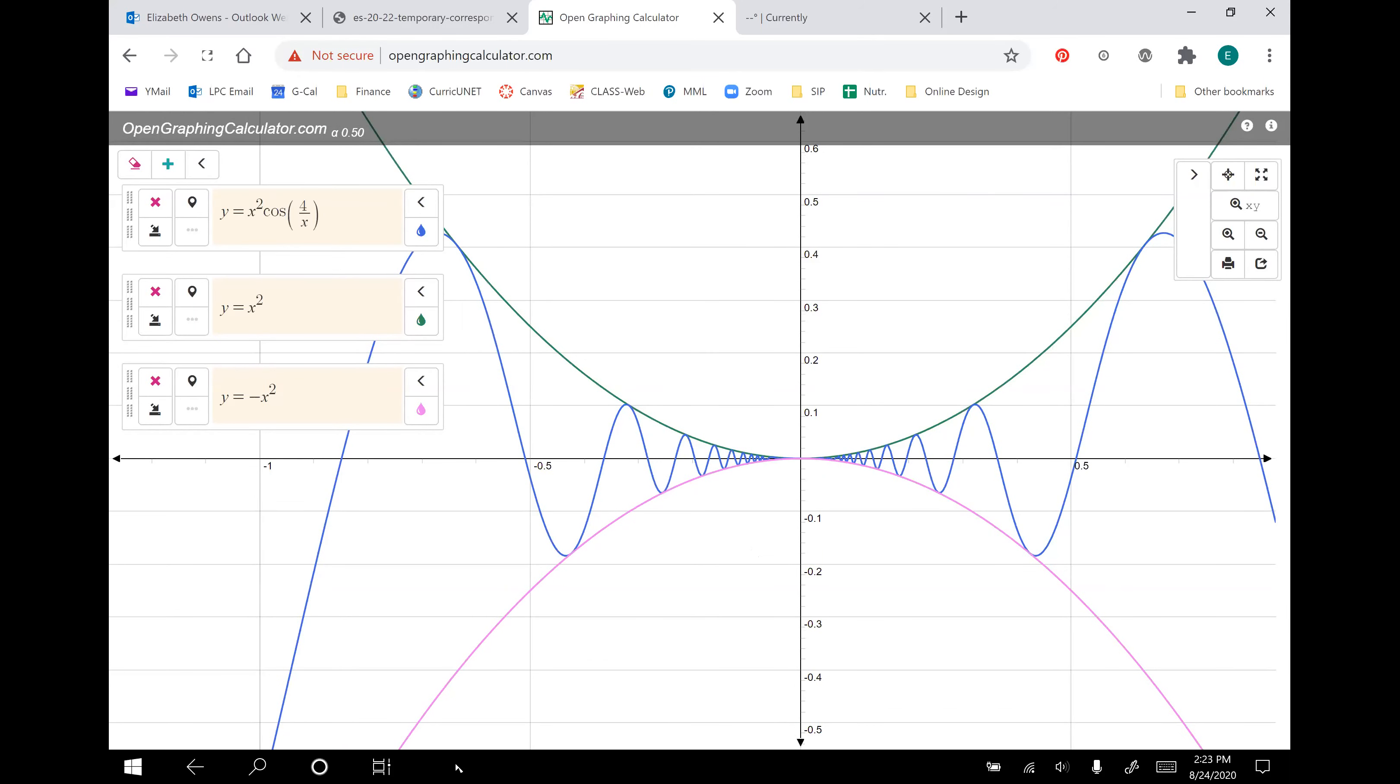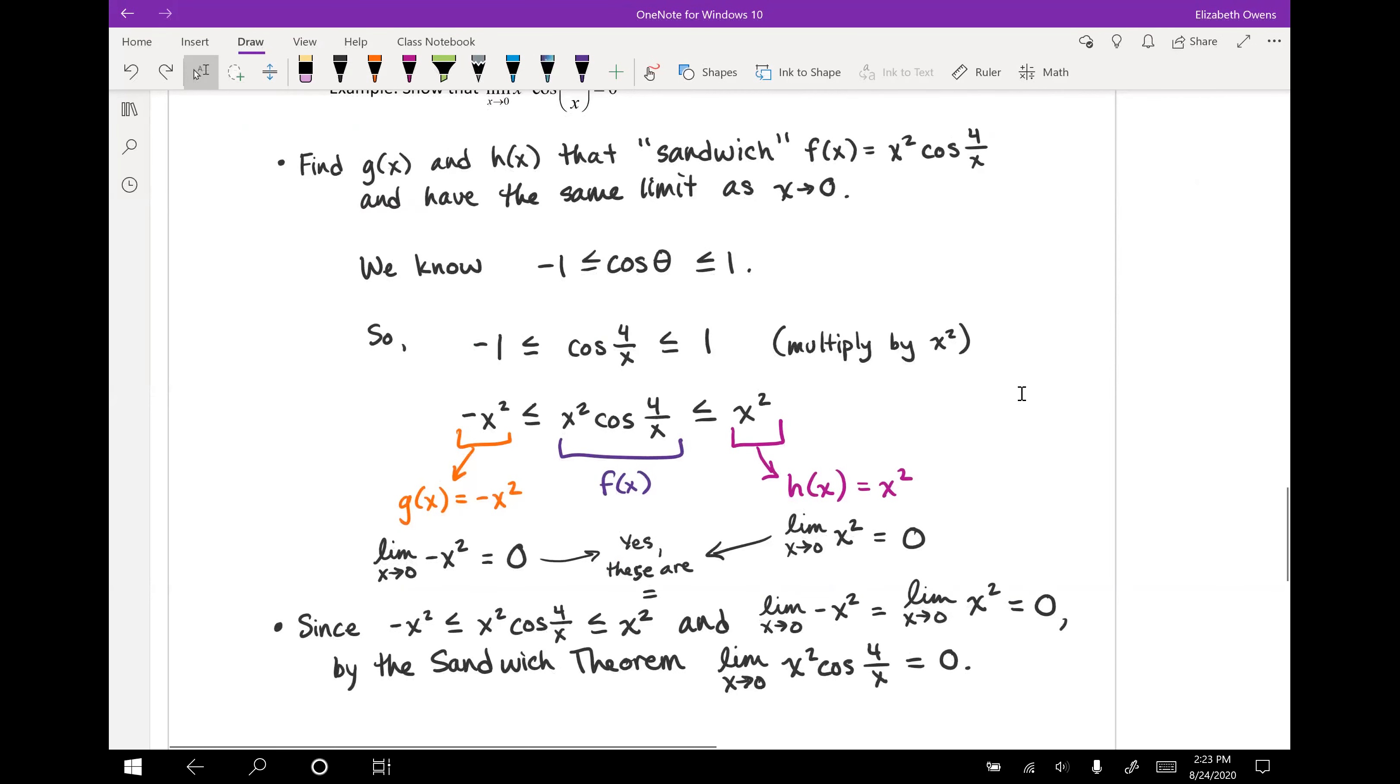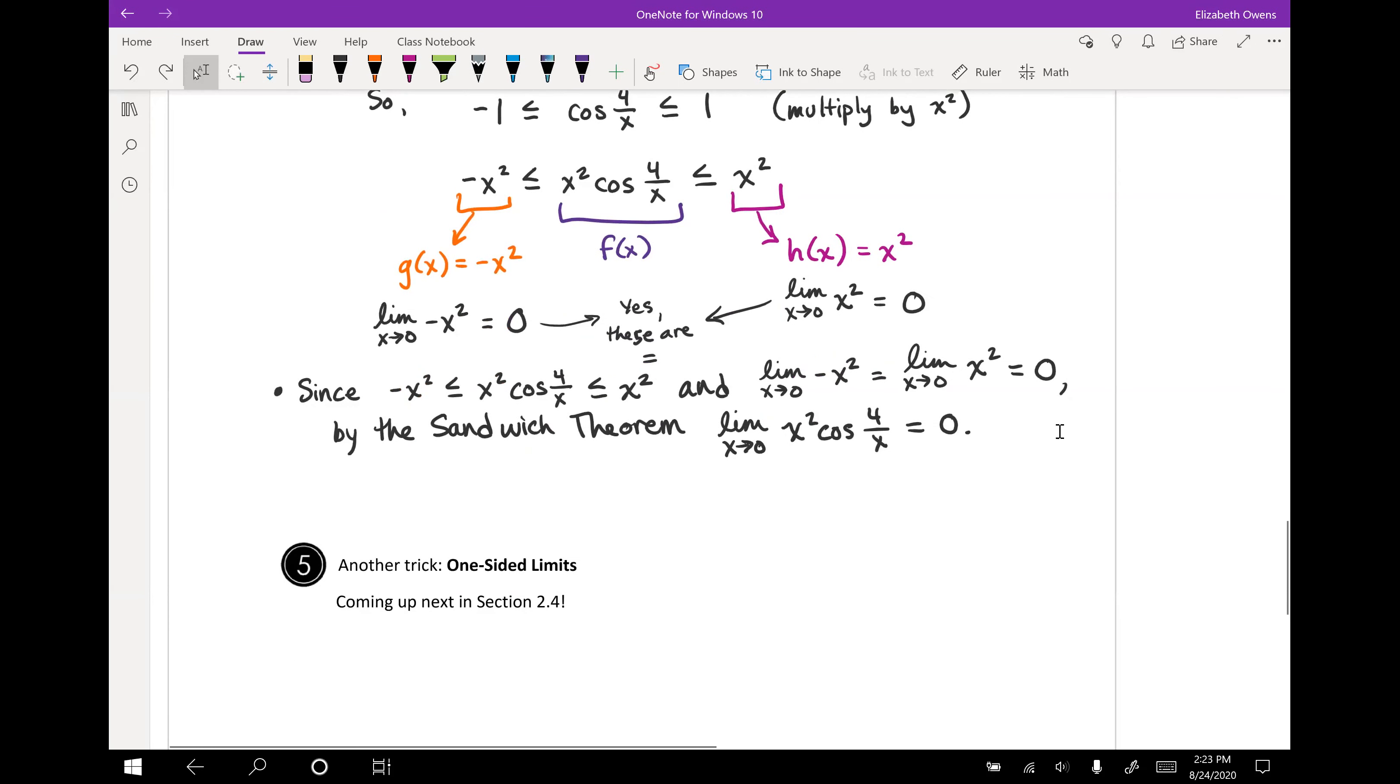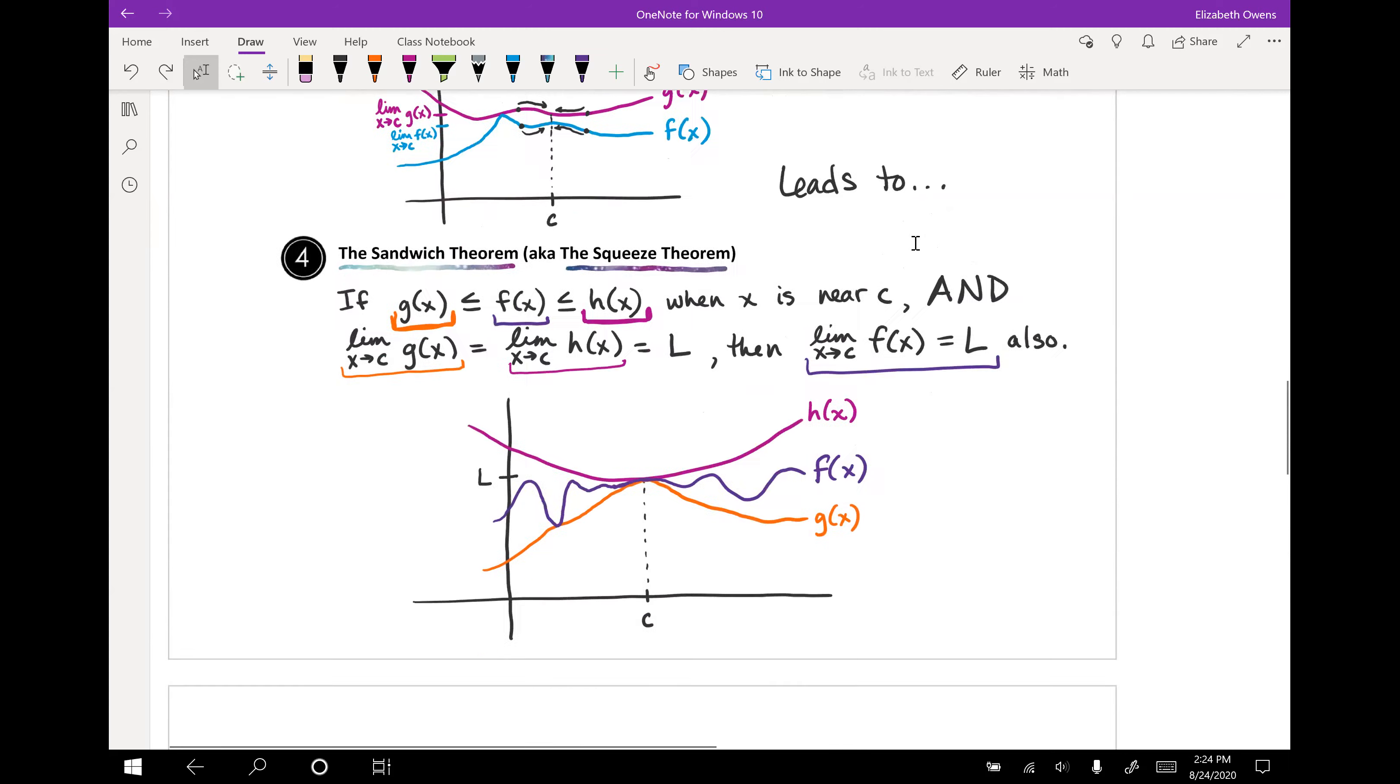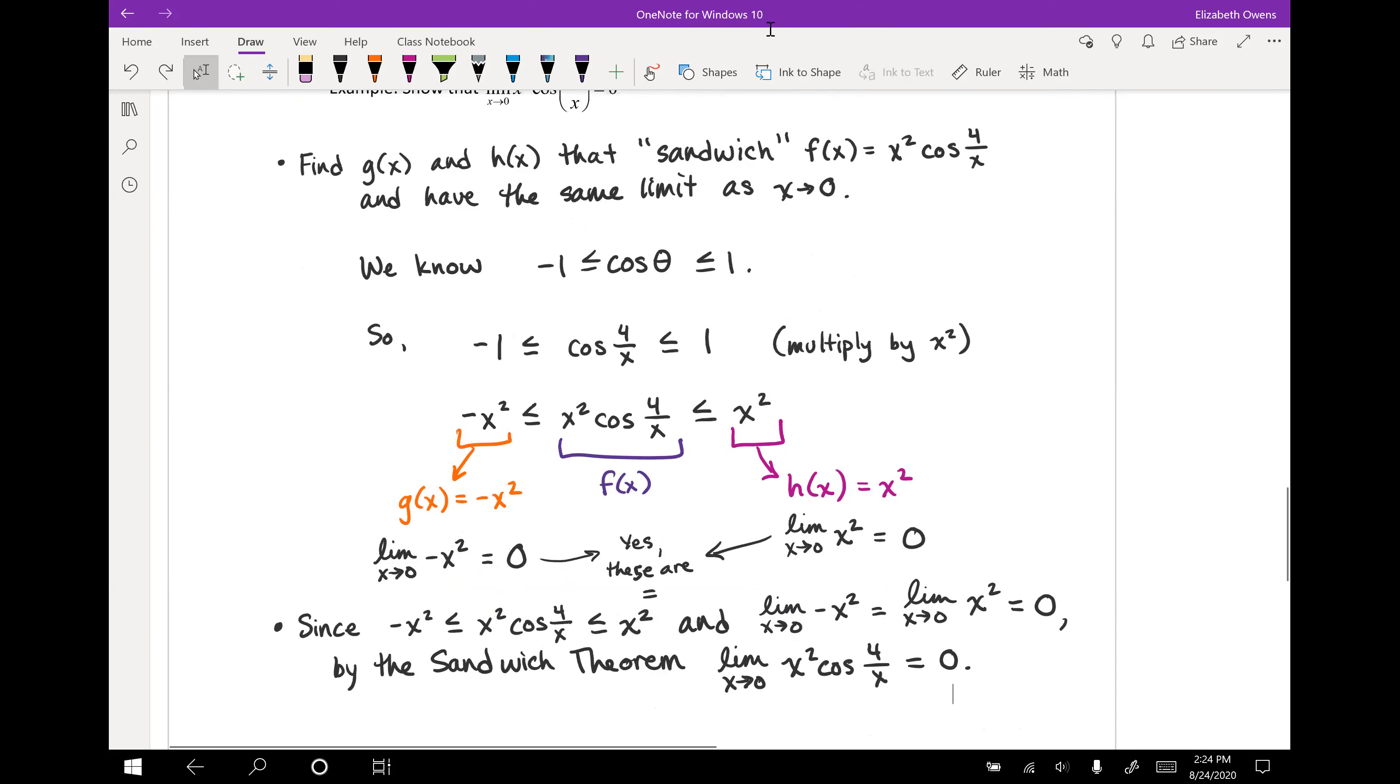All right, pretty cool. I like that graph. Now there is one more trick we can use for showing what limits are doing or evaluating limits algebraically. This is the idea of one-sided limits. But the book actually saves that for another section, Section 2.4. So we are going to have that section coming up next and we'll look at that one-sided limits idea. But for now, there were the four tricks for evaluating limits algebraically.